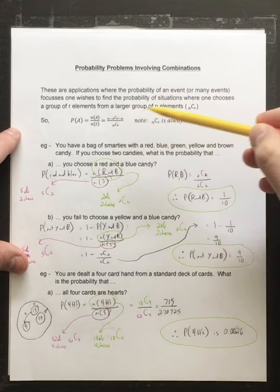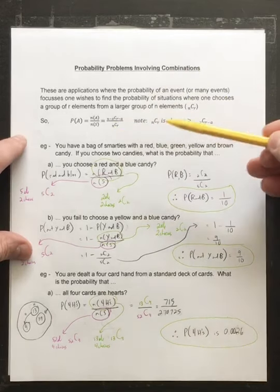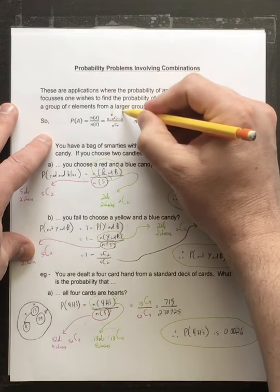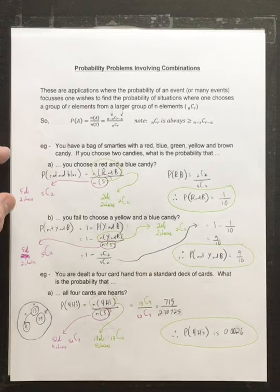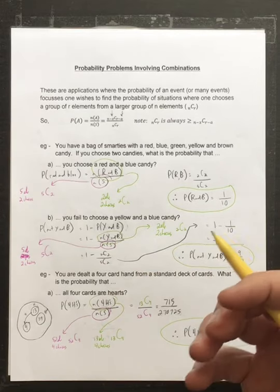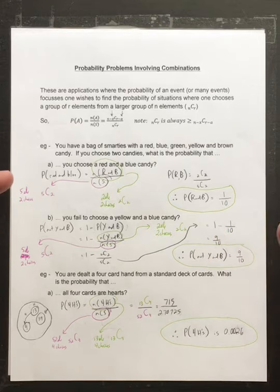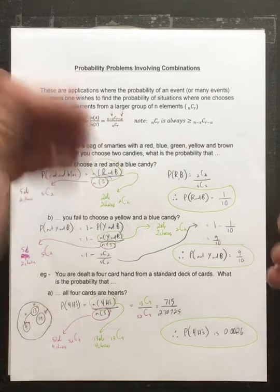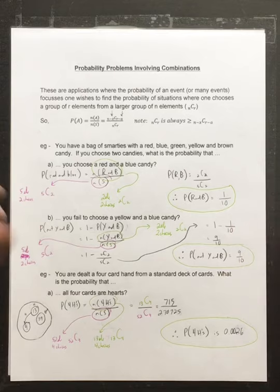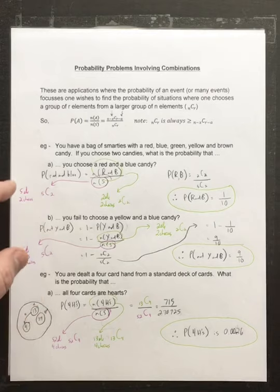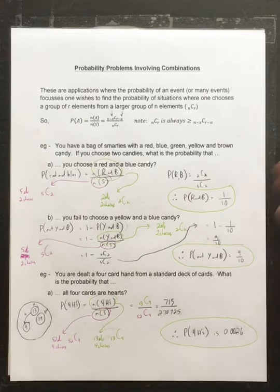For probability involving combinations, our denominator is always the universal set — nCr — and our numerator is a subset. We're taking away some elements overall and also taking away elements we're choosing. The numerator is always smaller than or equal to the denominator, because probability can't exceed 100% — if it equals it, then it's certain.